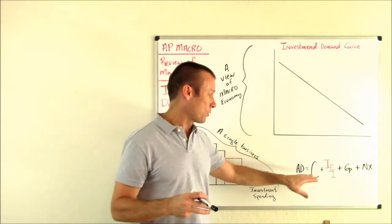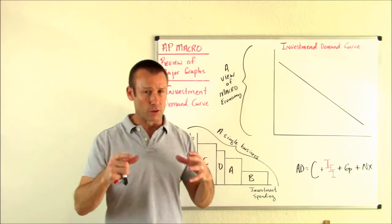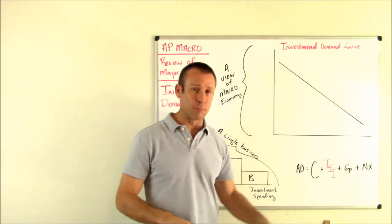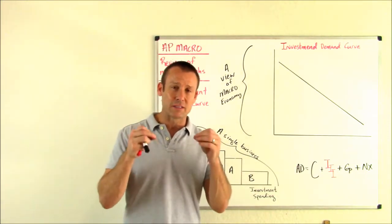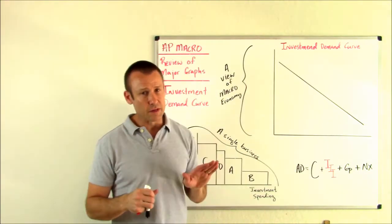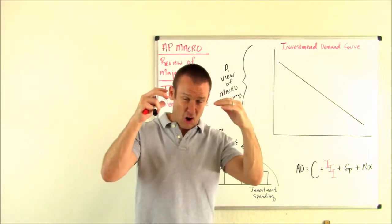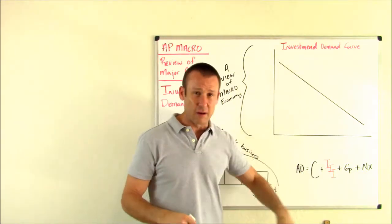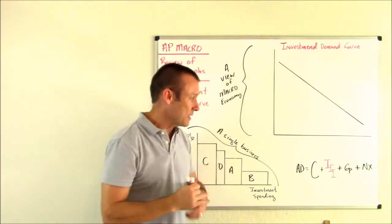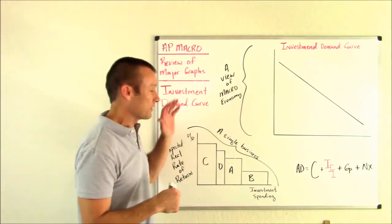Investment is actually not as big a component of AD as consumption, but it is very much arguably a more important component. Why? Because investment is definitely the most unstable component of aggregate demand — it fluctuates the most. When the economy starts booming, investment picks up a lot. But when that economy crashes, investment demand can also decrease a ton. And macroeconomics is all about trying to create stability in the economy, so there is a lot of focus on this component of AD. That's why we're studying the investment demand curve.